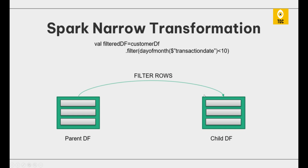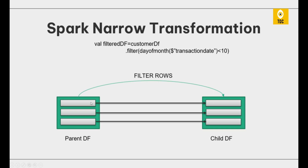The important concept here is understanding how the transformation occurs in terms of dependency. The child data frame is exactly dependent on the parent data frame, which is why Spark narrow transformation is also called narrow dependency. Each partition — represented by the rectangular boxes shown here — in the parent will derive to a single partition in the child, meaning there is no shuffling involved.